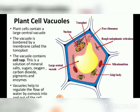In young plant cells, cytoplasm is evenly distributed. During division and elongation, there is an increase in the size of the cell, but the amount of cytoplasm does not increase. As a result, bubbles are formed. These bubbles or vacuoles join together to form a large vacuole.